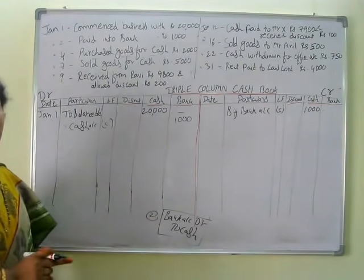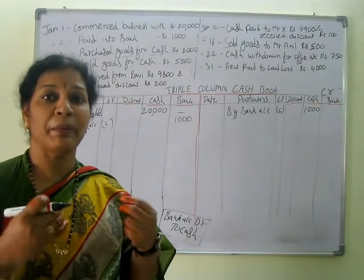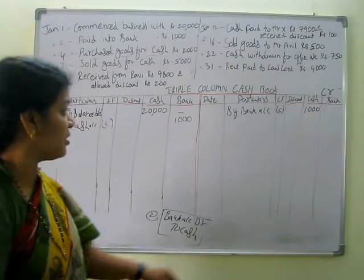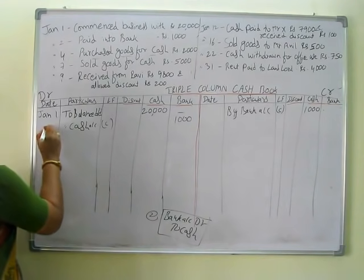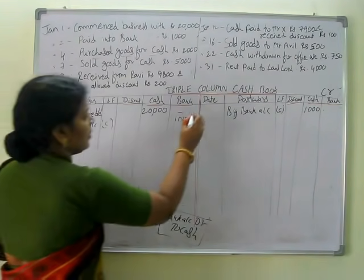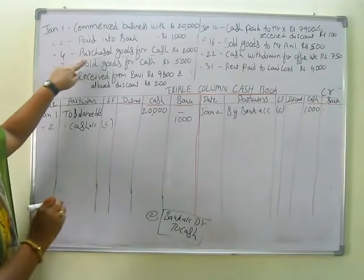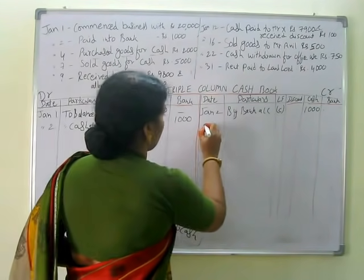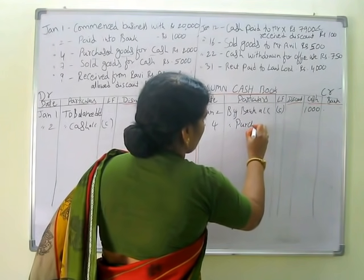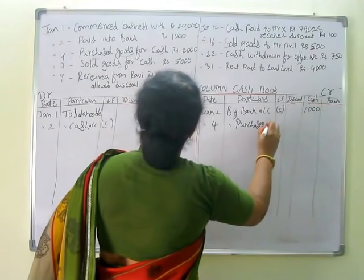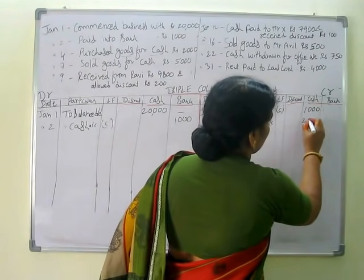Next transaction: purchased goods for cash. Whenever we are purchasing goods, the amount is going out — purchasing means payment. All the payments will be on the credit side. January 3rd — by purchases account. How much? 2,000. Payment through cash, so write 2,000 in the cash column.